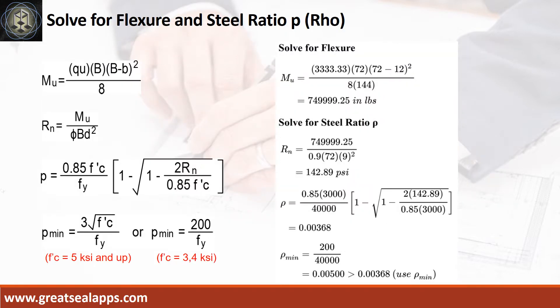Given ultimate soil pressure equals 3333.33 PSF, footing width equals 72 inches, and column side equals 12 inches, the maximum moment is 749,999.25 inch-pounds.